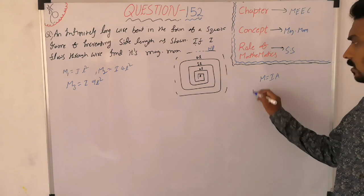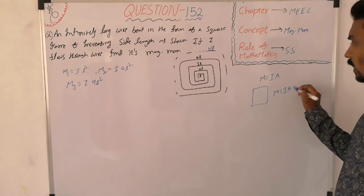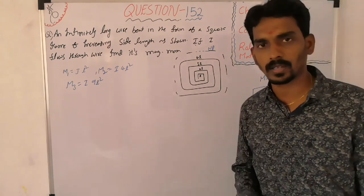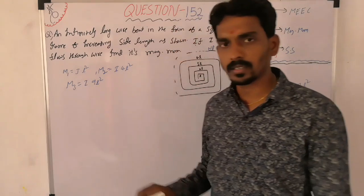Now, for one frame, what is the magnetic moment? Current into area means I into L square, because area of square is L square. So M1 equals IL square.